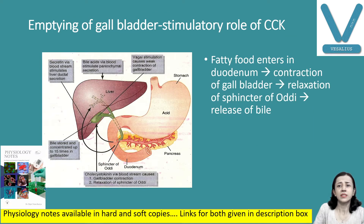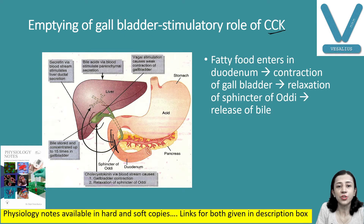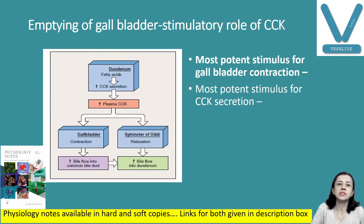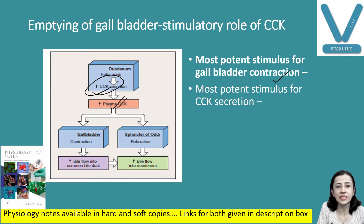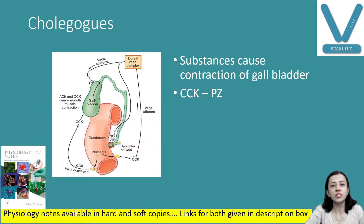Now, emptying of the gallbladder. There is a role of cholecystokinin — CCK. Cholecystokinin causes contraction of the gallbladder. Whenever fatty food reaches the intestine, there is release of the hormone cholecystokinin, which causes contraction of the gallbladder and relaxation of the sphincter of Oddi. So bile is released from the gallbladder into the second part of the duodenum. This is the most potent stimulus for gallbladder contraction — the hormone cholecystokinin.